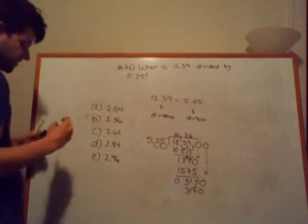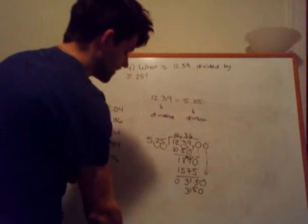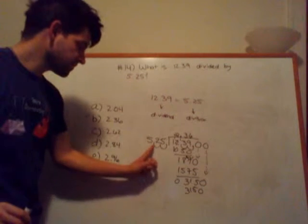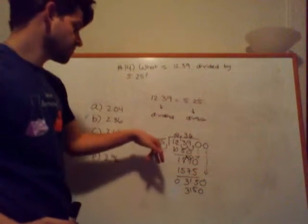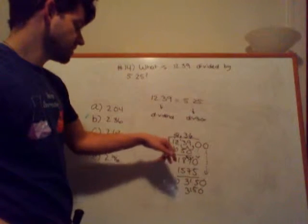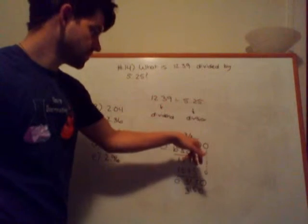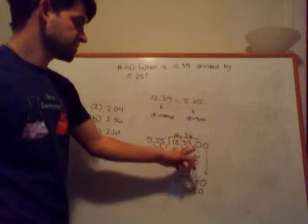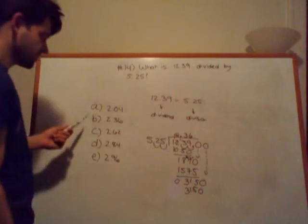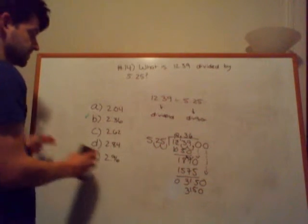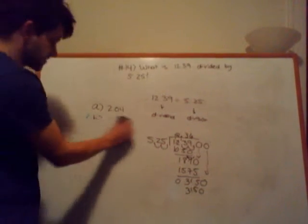So, our answer for our quotient of 12.39 divided by 5.25 is indeed 2.36. And just a little recap. If you want to make it a little less daunting, go ahead and make these whole numbers. As long as you move the decimal place two places here, and as long as you do it here as moving two places to the right, it is mathematically sound. So 2.36 is indeed our answer. Let's go to the next question.